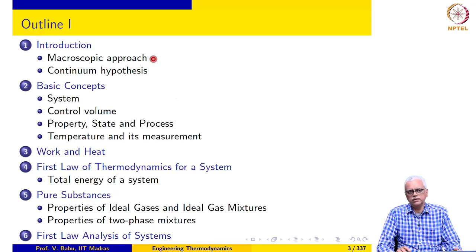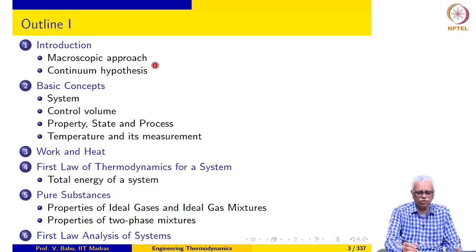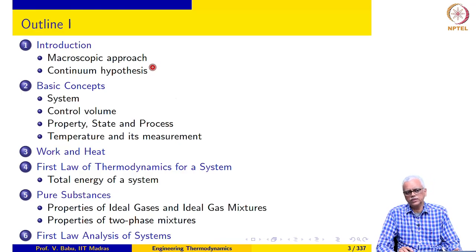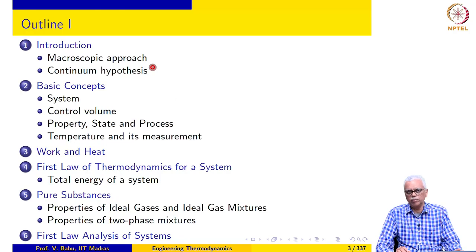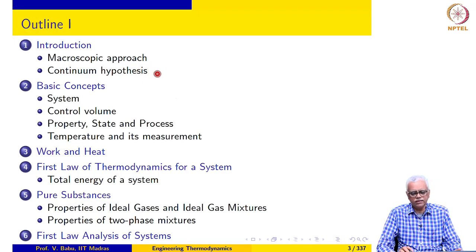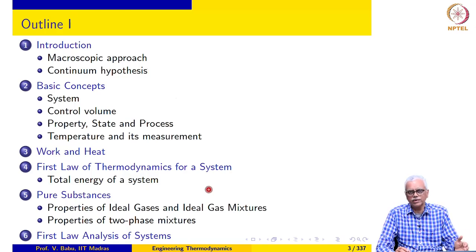We start with an introduction and discuss two important concepts: the macroscopic approach and the continuum hypothesis. Thermodynamics can be understood using two different approaches. One is the microscopic approach which involves the kinetic theory of gases, and the second is the macroscopic approach, which is the approach we are going to follow in engineering thermodynamics. The continuum hypothesis underlies the macroscopic approach, and we will discuss under what conditions we can use the macroscopic approach and when we should abandon it.